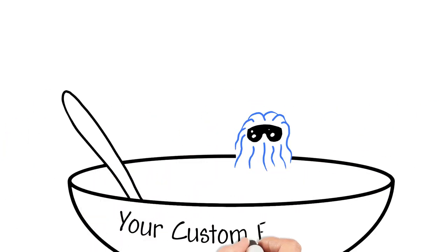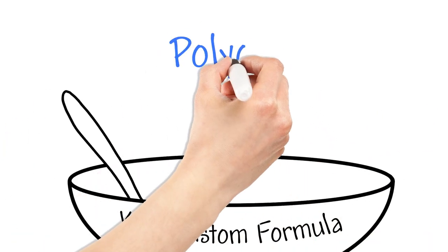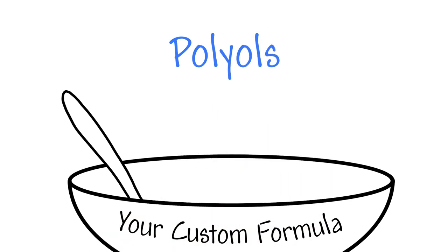Now when our customers make a resin, they create a custom formula of additives that include polyols, also supplied by BASF, which are the backbone of the mix.